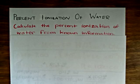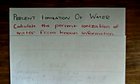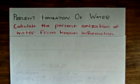In this video, I want to demonstrate how we would calculate the percent ionization of water. We know that all water undergoes the process of auto-ionization, which is basically just the reaction of two water molecules between themselves to produce a hydronium ion and a hydroxide ion.